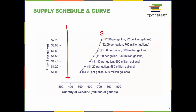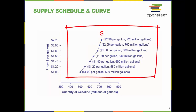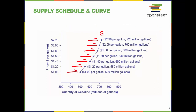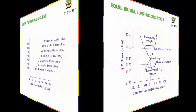Just like demand, it is important to note that in general, supply refers to the entire supply schedule and curve, and that quantity supplied refers to the individual points on the curve or individual price and quantity sets in the schedule.